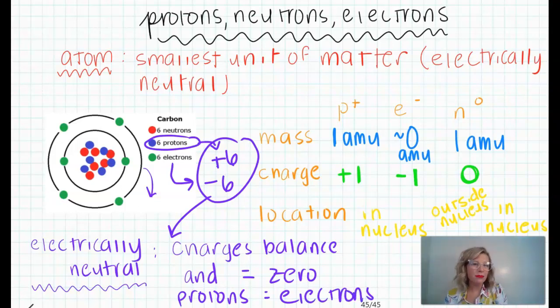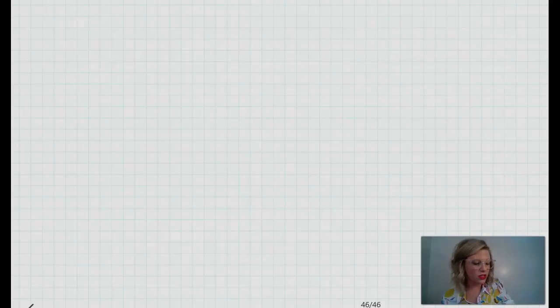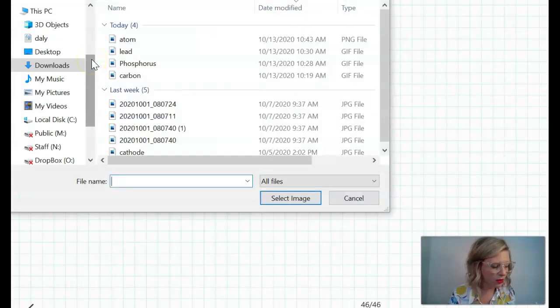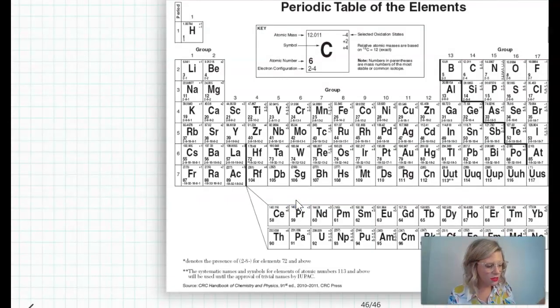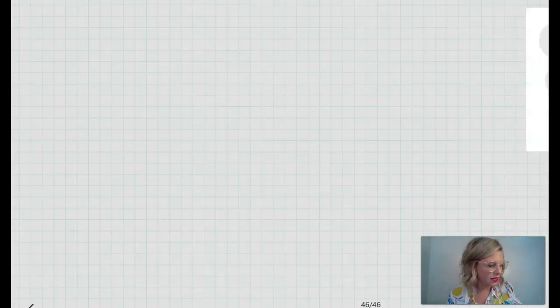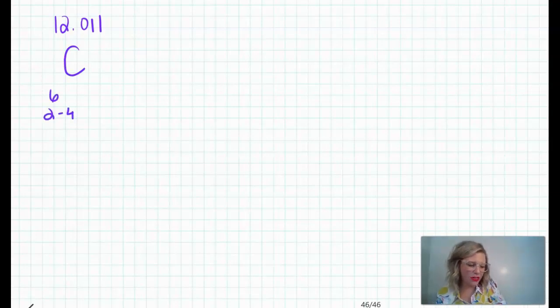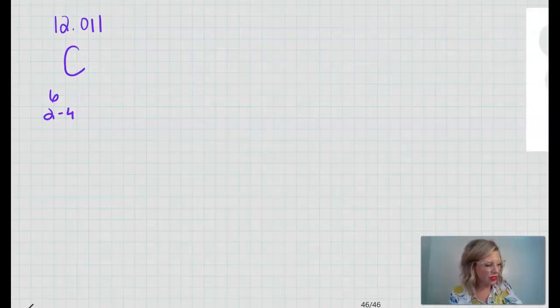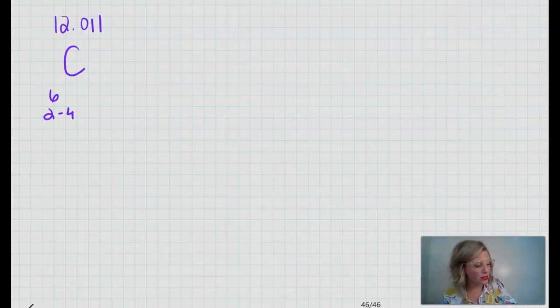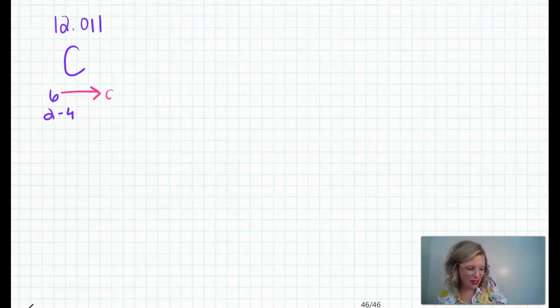So now what does that mean and how can I determine from just the element symbol, if I'm not given a diagram and I can't count the protons, neutrons, and electrons, how can I determine the number of protons, neutrons, and electrons? So let's go ahead and hop to a new page of our notes. And I'm going to include here just a few more images so we can do an example together. So you'll notice if you're following along on my sheets that I've included the carbon symbol from the periodic table. And there's two major things that I want to talk about here. The first of which is called the atomic number. And the atomic number is located at the bottom left. This is our atomic number.